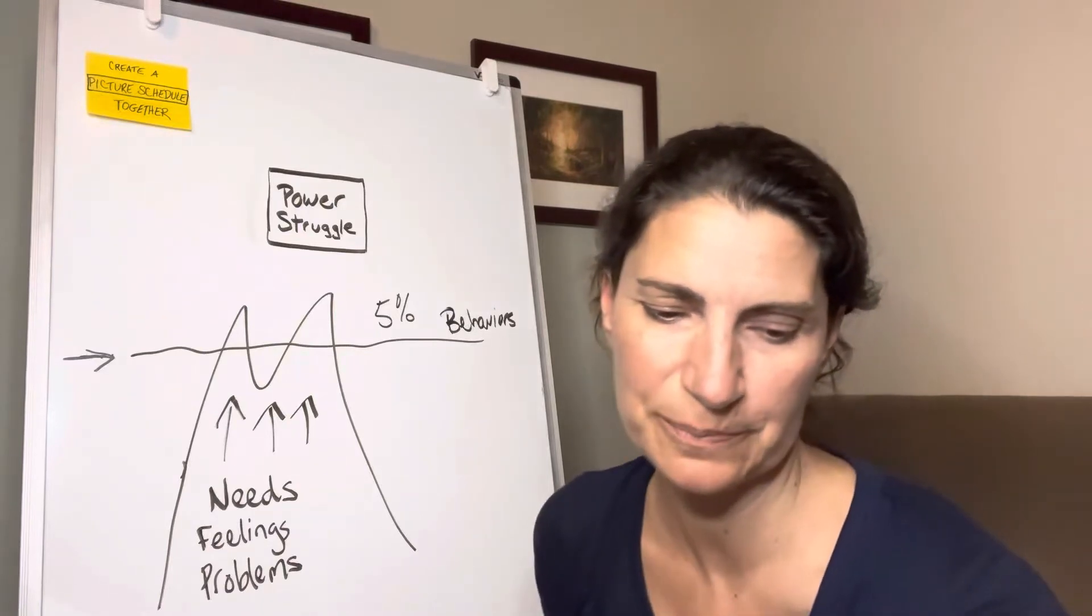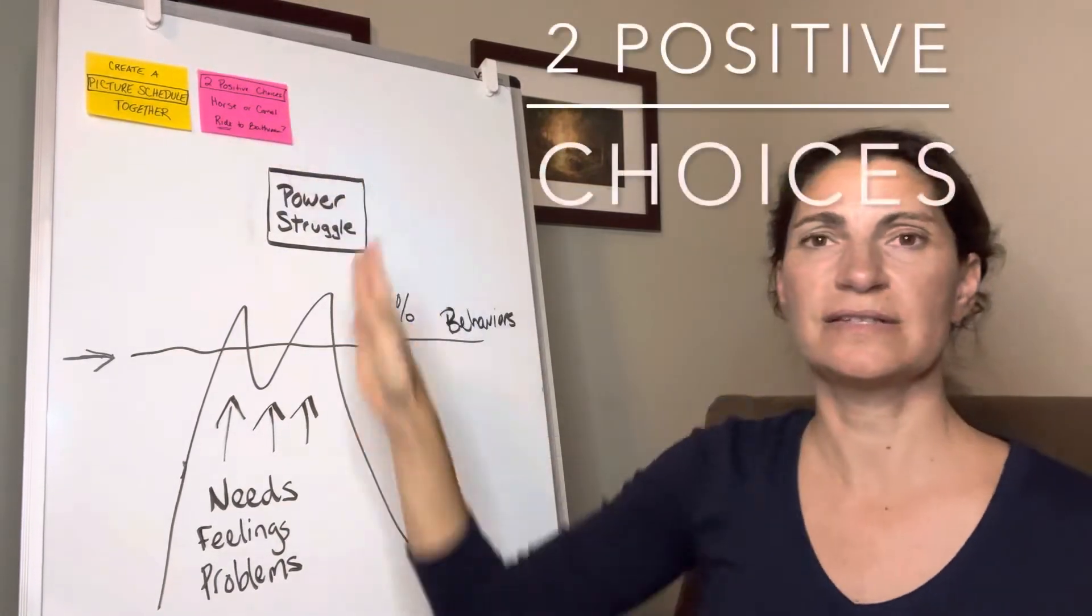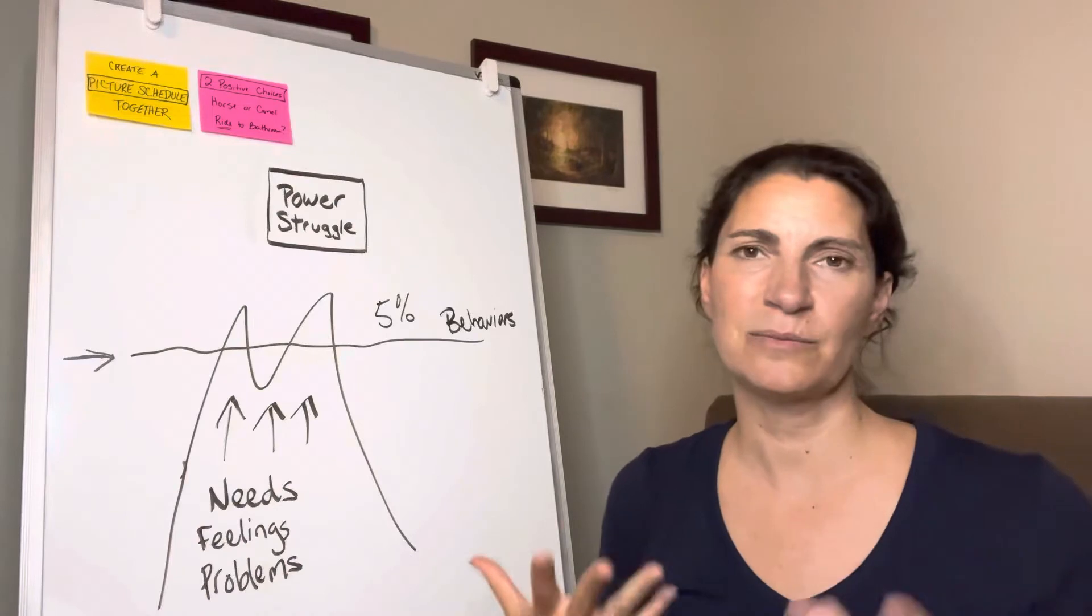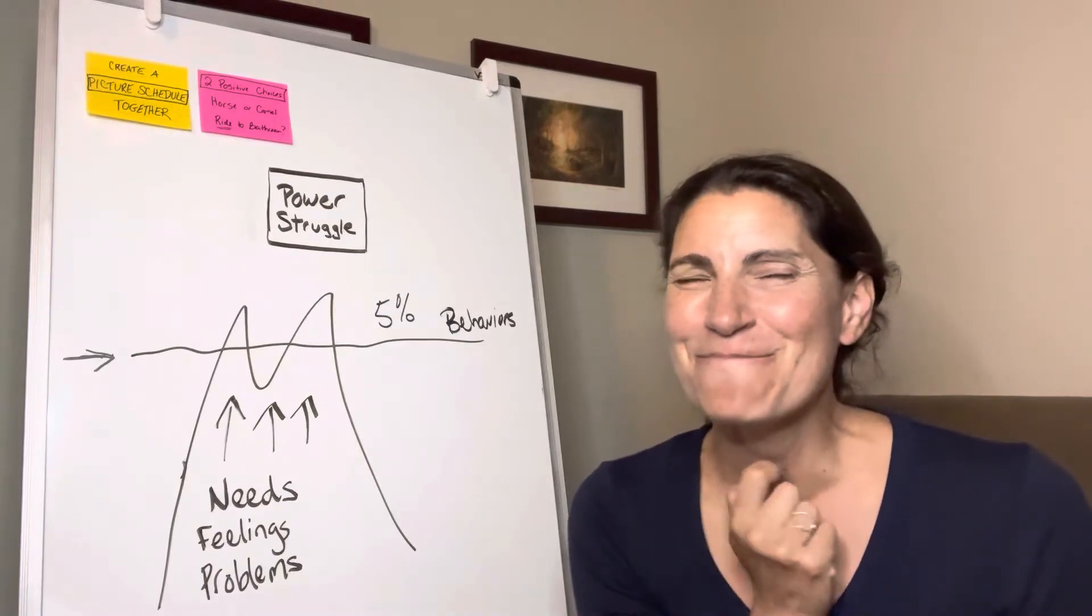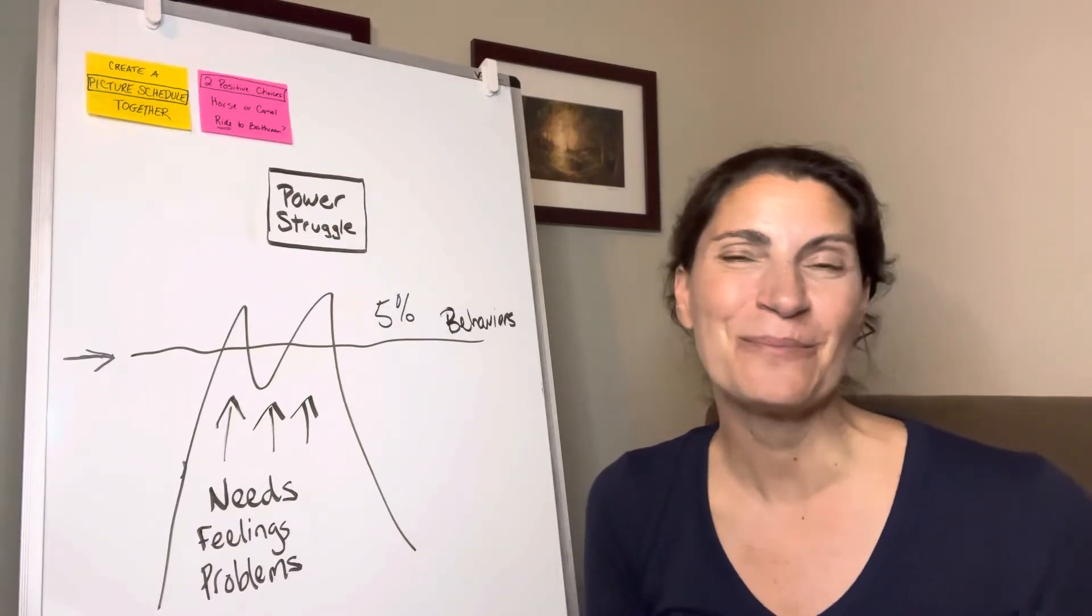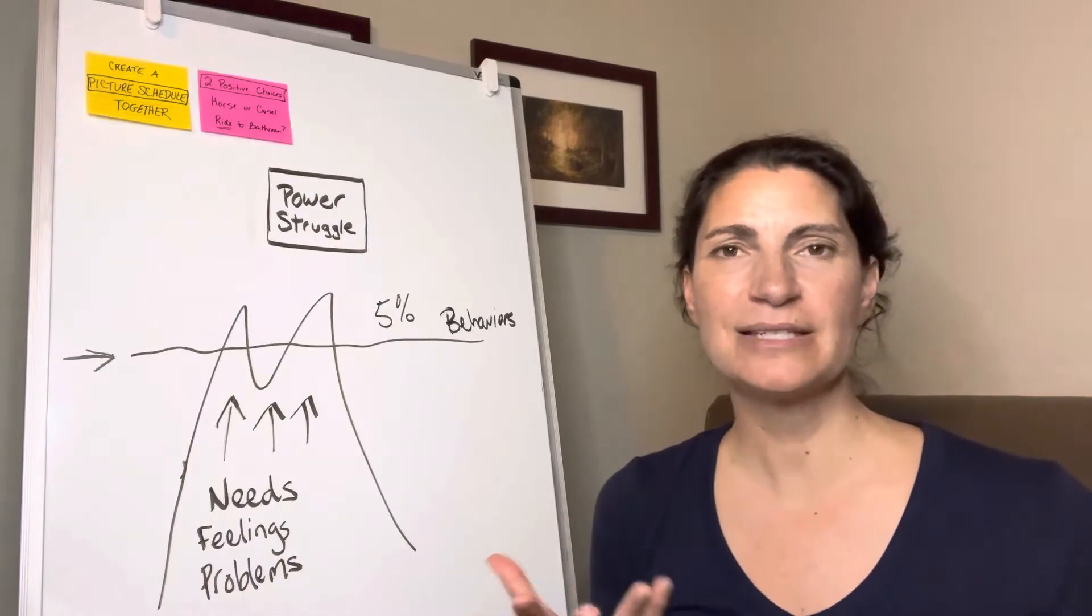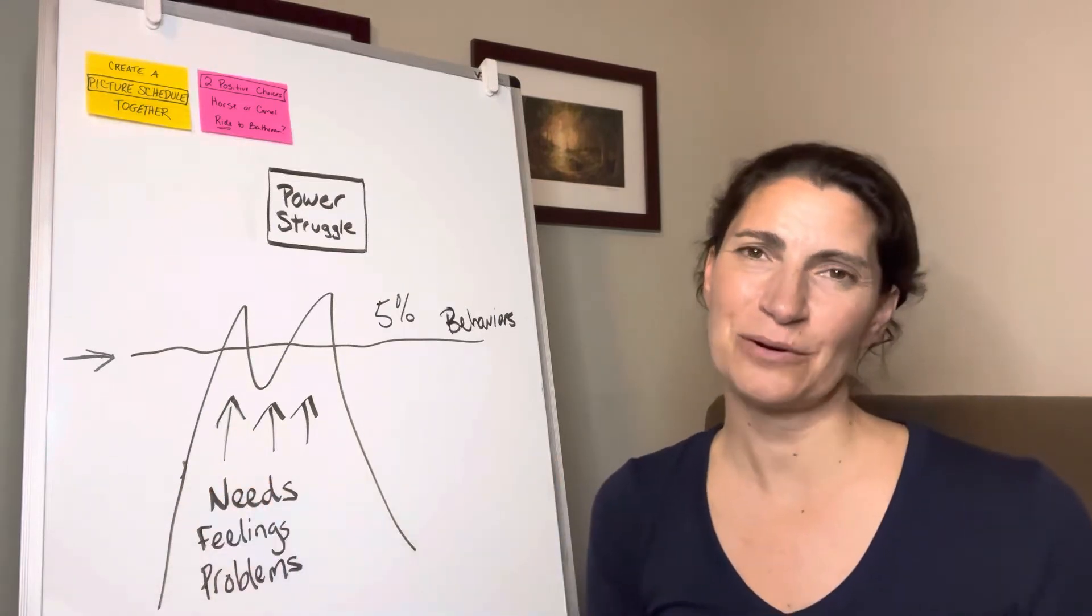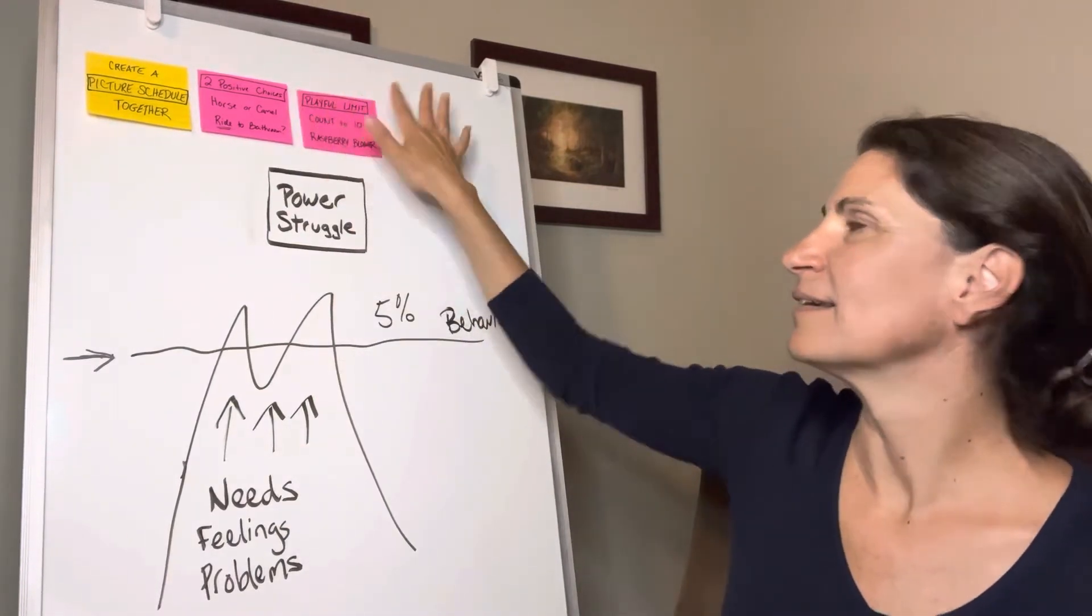So create a schedule with pictures. So the second intervention is two positive choices. Let's say you're in the living room or the family room and you want to have your child go into the bathroom to brush their teeth and they're saying no and this isn't working, we're in the power struggle. So to think out of the box, I know, let's become some sort of animal tonight. What do you want to do on the way to the bathroom? Do you want to become a horse or do you want me to become a camel and you can ride on the back? Which one would you like to ride, a horse or a camel? So just entering their language a little bit, speaking their language of play and imagination and making that road and path to the bathroom a little more fun.